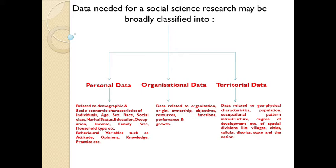This type also includes behavioral variables like attitude, opinions, knowledge, and practice. The second type is organizational data related to organization origin, ownership, objectives, resources, functions, performance, and growth. The third type is territorial data related to geophysical characteristics, population, occupational pattern, infrastructure, and degree of development of special divisions like villages, cities, taluks, districts, states, and the nation.